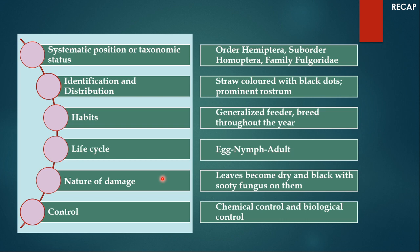Let us recap the whole lecture. For systematic position, Pyrilla purpusilla belongs to order Hemiptera, suborder Homoptera, family Fulgoridae or Lophopidae. For identification, it can be identified by its straw-colored body with minute black dots and a very prominent rostrum with piercing and sucking mouthparts. Habits: it is a generalized feeder, breeds throughout the year, and can hop or fly off very easily. Life cycle includes egg, nymph, and adult stages. Damage: leaves become dry and black with sooty fungus, preventing food production and hampering plant growth and sugar production. For control, various chemical and biological control methods are available to keep this pest under check.